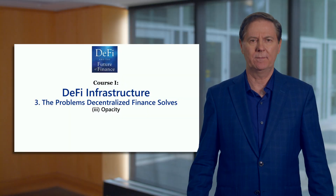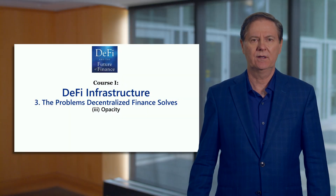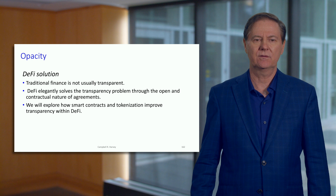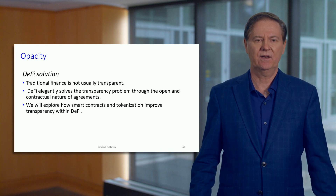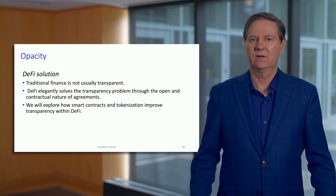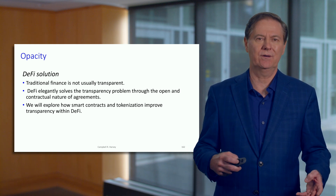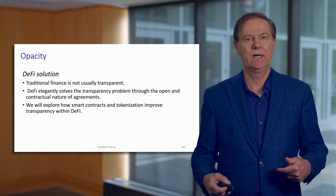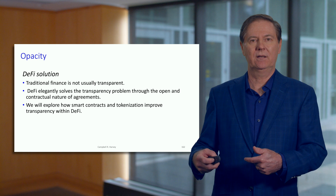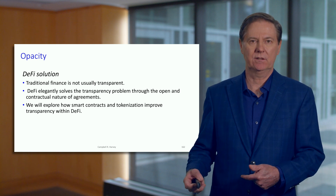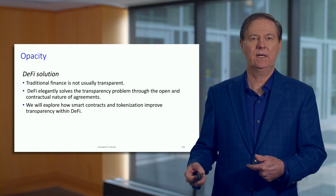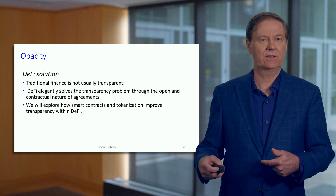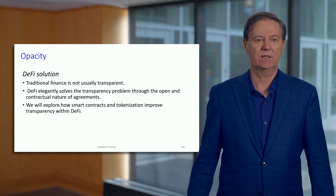The third problem of centralized finance is opacity. Traditional finance is transparent to only certain people, in particular the regulator. We need to trust that the regulator has the information it needs, that the company is providing accurate information, and that the regulator is very diligent in checking all the time.